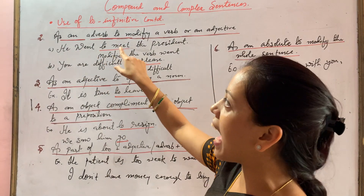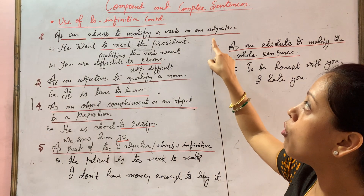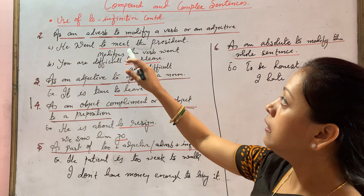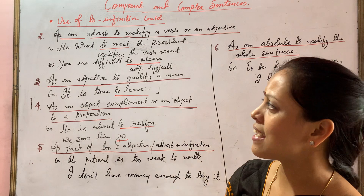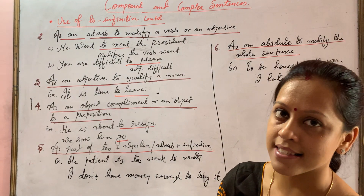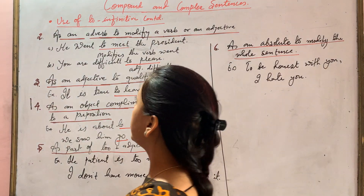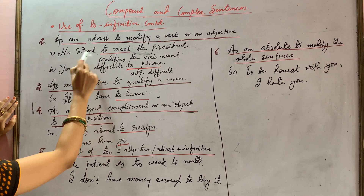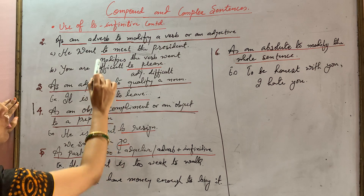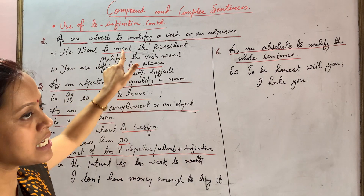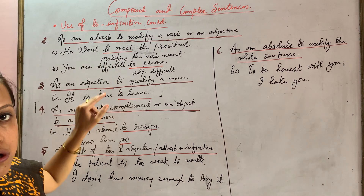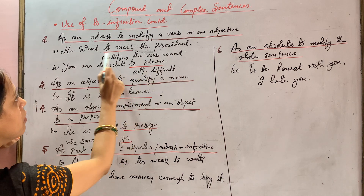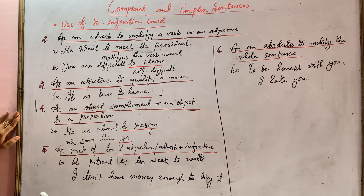The to-infinitive is used as an adverb to modify a verb or an adjective. For example: 'He went to meet the president.' Here, 'went' is the verb and it is modified by the to-infinitive 'to meet.' I have also underlined 'to meet' to show that it modifies the verb 'went.'